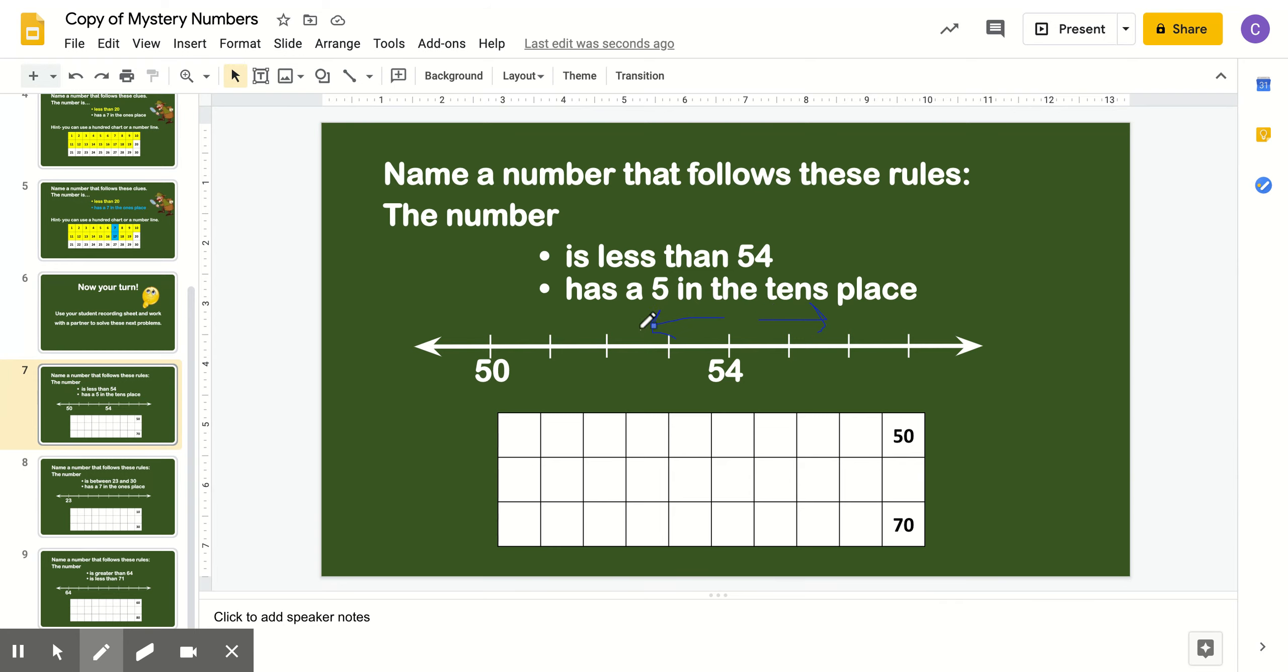Right, we go that way. It's less than 54. So if we were to use our less than symbol, it would point that way. So I'm going to fill this number line, and I'm going to write 51, 52, and 53.